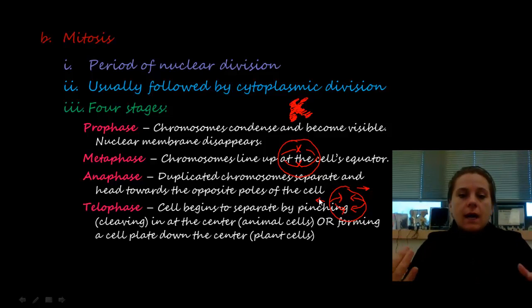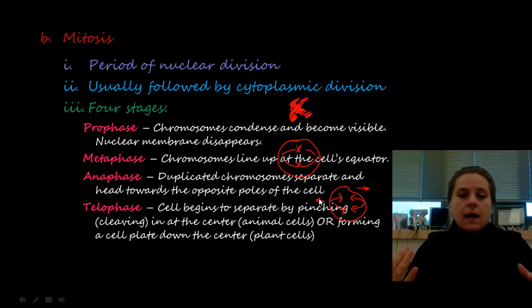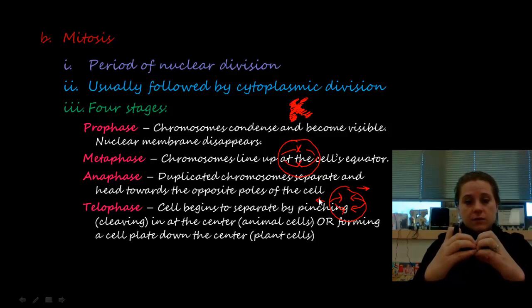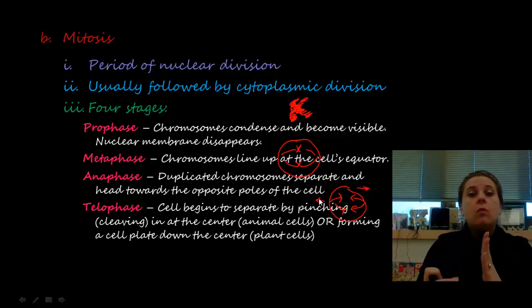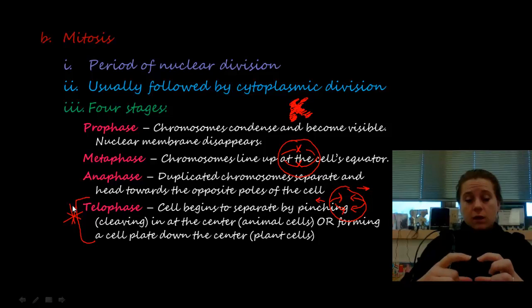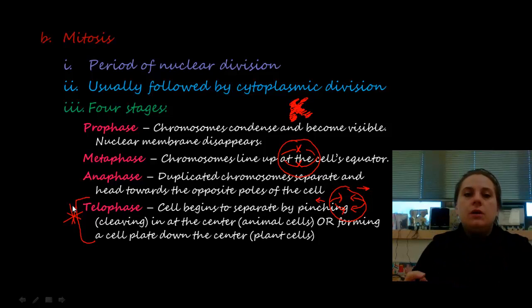The last phase of nuclear division is telophase, where we see a blend of the final pulling apart of nuclear contents and the beginning of cell separation. The cell begins to cleave: in an animal cell it pinches in, while in a plant cell — because of its rigid cell wall — a cell plate is constructed right down the middle to separate the two cells. This is one of the biggest differences between animal and plant mitosis.